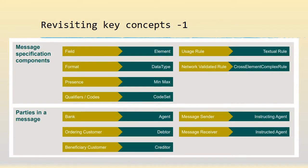Revisiting key concepts: since we are moving from MT to MX, we would have to unlearn and learn a few critical terminologies. The first one is that of a field. In MT, we used to call tags as fields, but here we are going to call them elements of an XML tag. For example, a 50K field in an MT message would now translate to a specific tag or element in the XML format of an ISO message.